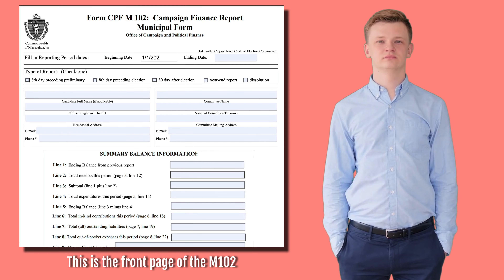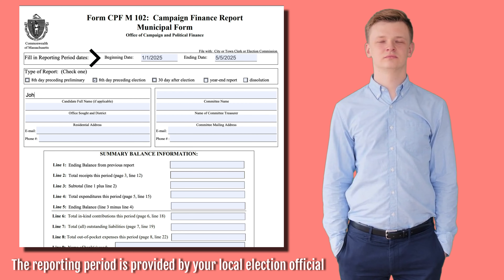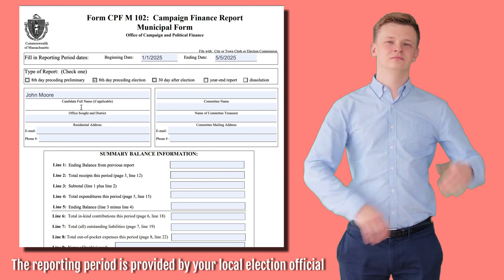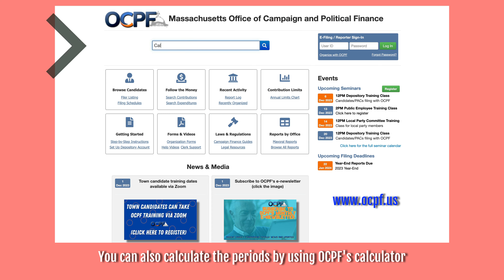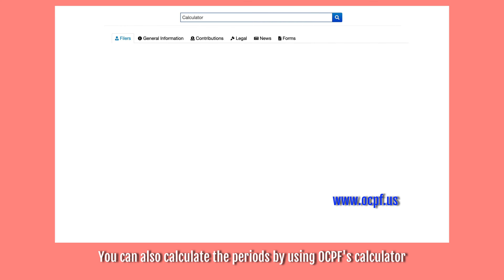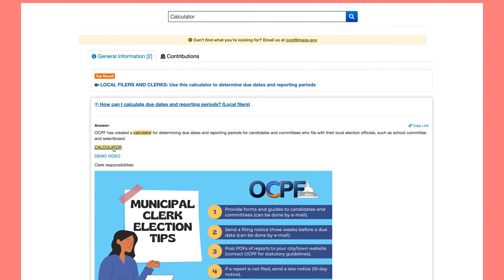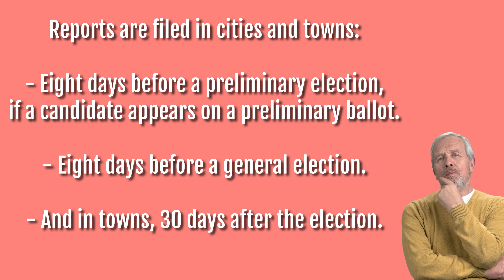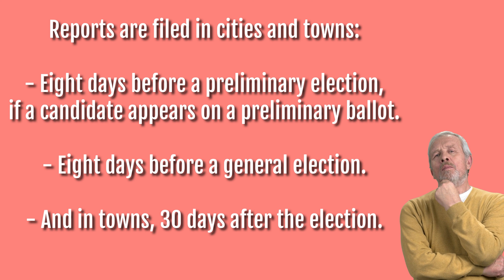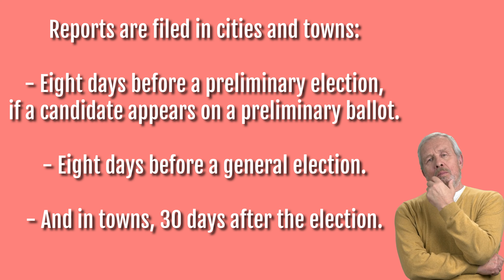This is the front page of the M102. The reporting period is provided by your local election official. You can also calculate the periods by using OCPF's calculator. Reports are filed in cities and towns eight days before a preliminary election if a candidate appears on a preliminary ballot, and eight days before a general election.